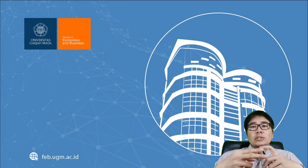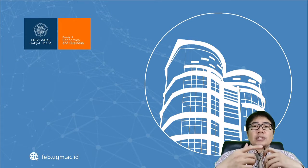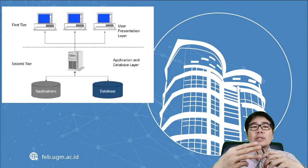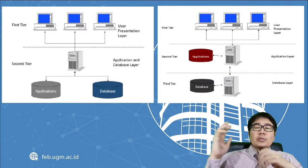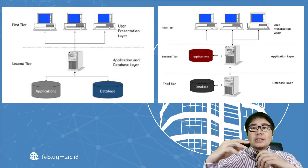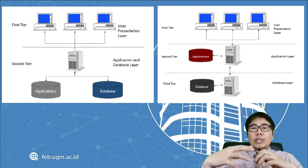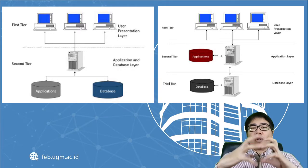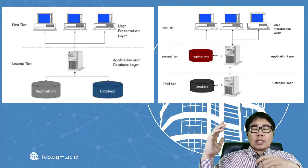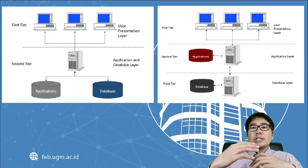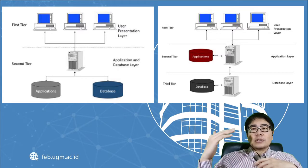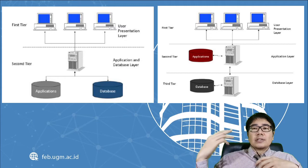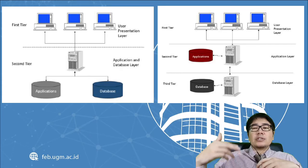Within the client-server model there are two structures: the two-tier model and the three-tier model. In the two-tier model, the application and database are installed and stored inside one server. In the three-tier model, the application and database are separated into two servers — giving three levels: the client, the application server, and the database server.